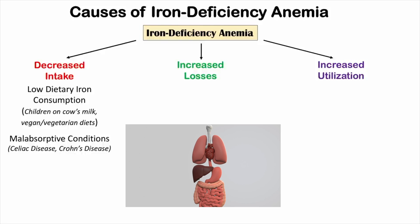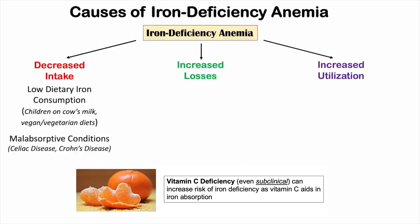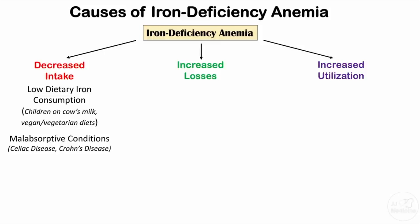Malabsorptive conditions can also lead to iron deficiency — an individual might be eating enough iron but not absorbing it properly. These conditions include celiac disease, which affects the duodenum, the first part of the small intestine where iron is absorbed. Crohn's disease can also cause inflammation in the duodenum, leading to absorption issues. Additionally, certain gastrointestinal surgeries that remove parts of the GI tract can increase the likelihood of iron deficiency anemia.